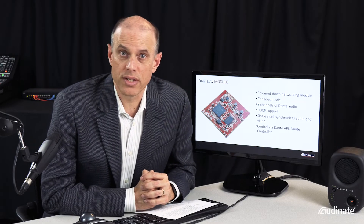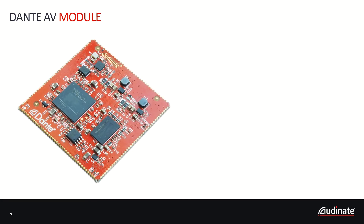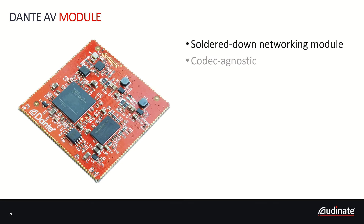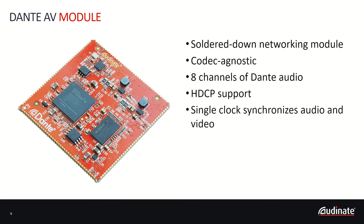The Dante AV module sits at the center of the board. It has a one gigabit network interface. It takes in video on a 32-bit bus, packetizes it, timestamps it, and puts it out on the network. It's also codec agnostic, taking in compressed video signals such as VC2, AV1, and JPEG 2000, and putting those on the bus and distributing them. Dante AV does not interpret the video signal — it knows how to deliver the bits in sync and sequence to the endpoints. The module also participates in the Dante clock distribution system using PTP distribution.